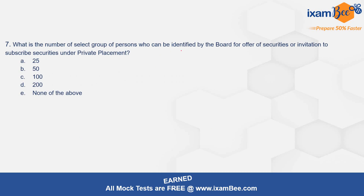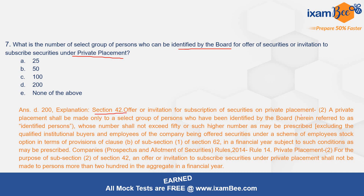Question number seven: what is the number of persons in a select group who can be identified by the board for offer of securities or invitation to subscribe under private placement? In private placement, companies approach a select group of persons identified by the board, to whom they offer their securities or invite to subscribe. The correct option is D — 200. Section 42 states that a private placement shall be made only to a select group of persons identified by the board, referred to as identified persons, whose number shall not exceed 50 or such higher number as may be prescribed — and in the rules, this has been prescribed as 200.